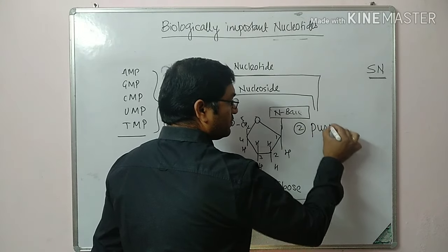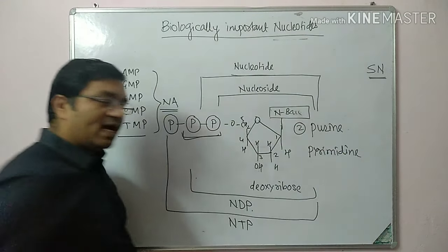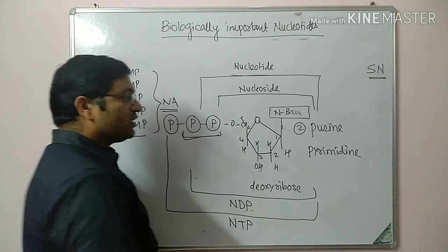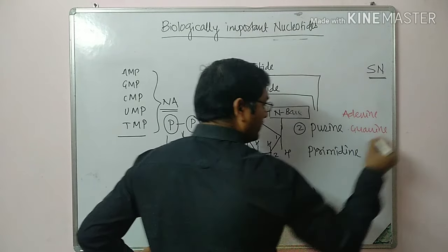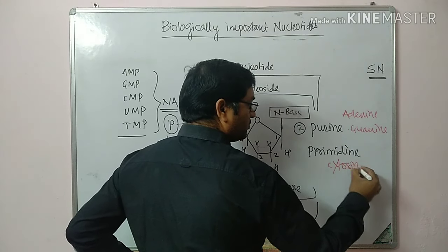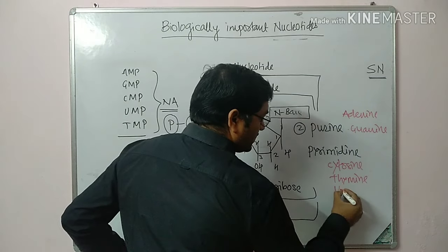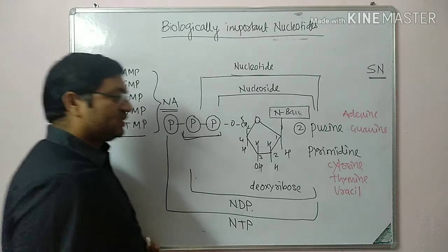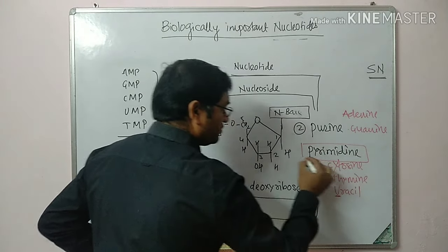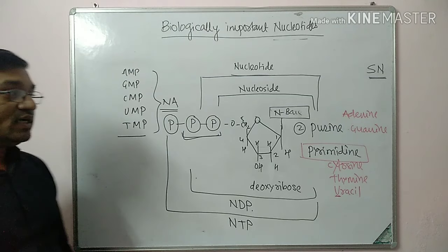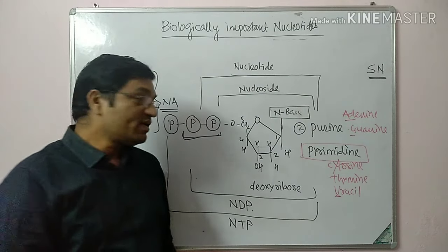There are 2 types of bases: purine bases and pyrimidine bases. Adenine and guanine are the purines. Cytosine, thymine — which is present in DNA — and uracil, which is present in RNA, are the pyrimidines. So there are 2 types of bases, and depending upon these bases, these nucleotides are named accordingly.